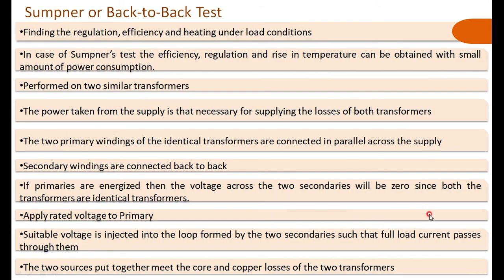Now we will go to the Sumpner's test, also called the back-to-back test. The Sumpner's test basically determines the parameters of the transformer and also helps us calculate the efficiency. The key difference from the OC test is that in the Sumpner's test the setup is kept running for a longer time, so that a rise in temperature can be observed — and the effect of that temperature rise on regulation and efficiency can be studied. That is the main advantage of the Sumpner's test.